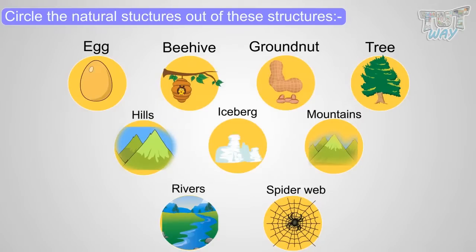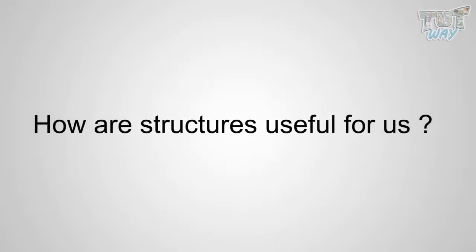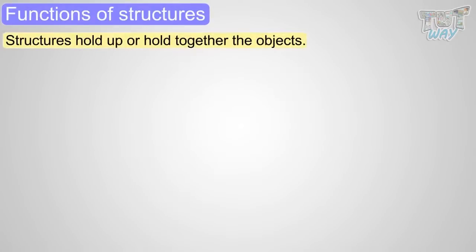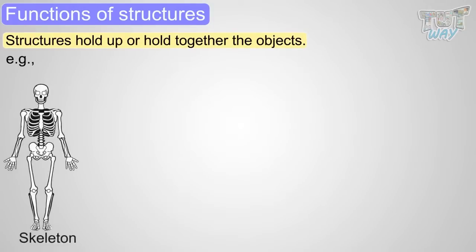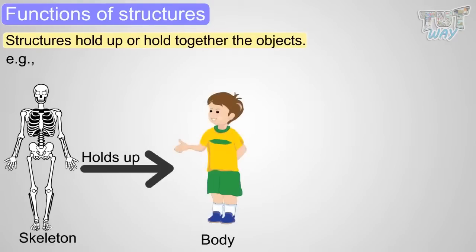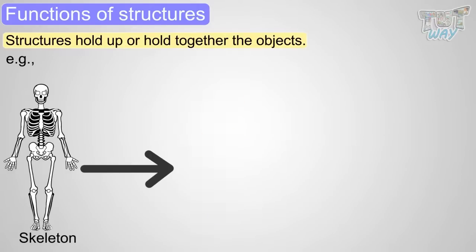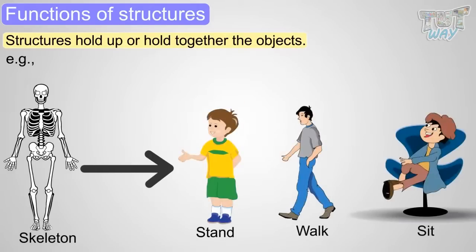Now let's see how structures are useful for us. Functions of structures. Structures hold up or hold together the object. For example, our skeleton is a natural structure that holds up the body. It's the structure of our bones because of which we can stand, walk, and sit. Our skeleton holds up and holds together our body.